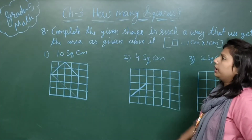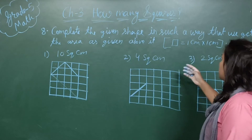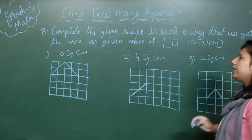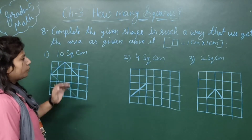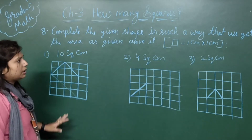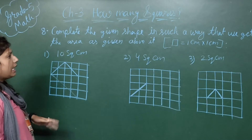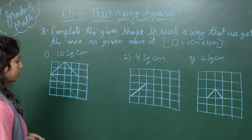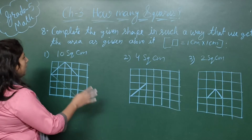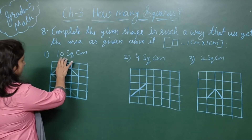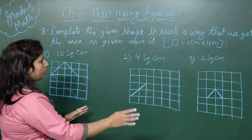Now see question number E: complete the given shape so that we get the area as given above it — 1 square centimeter by 1 centimeter by 1 centimeter. Question number 7 gives irregular or regular shapes, and you have to draw them. The areas given are 10 square centimeters, 4 square centimeters, and 2 square centimeters.